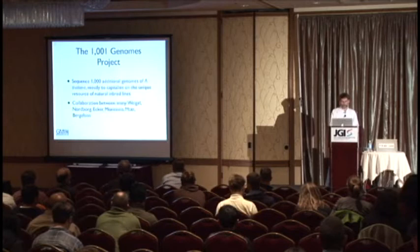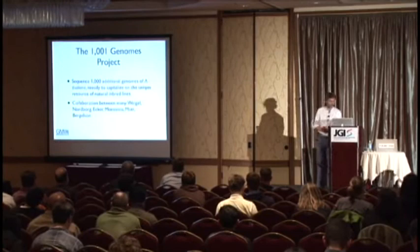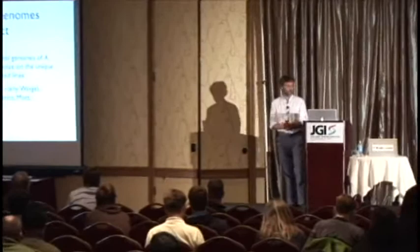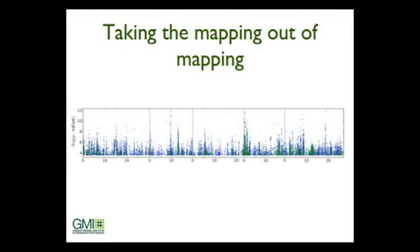The 1001 Genomes Project is a collaboration — Detlef Weigel played a major role. My lab is sequencing about 200 Swedish lines, we've done about 160 of those. Joe Ecker is doing a number, Monsanto has committed to 500, Richard Mott and Jory Bergelson are collecting plants. The goal is to take the mapping out of mapping — rather than inferring what's going on from indirect markers, you directly look at the sequence.